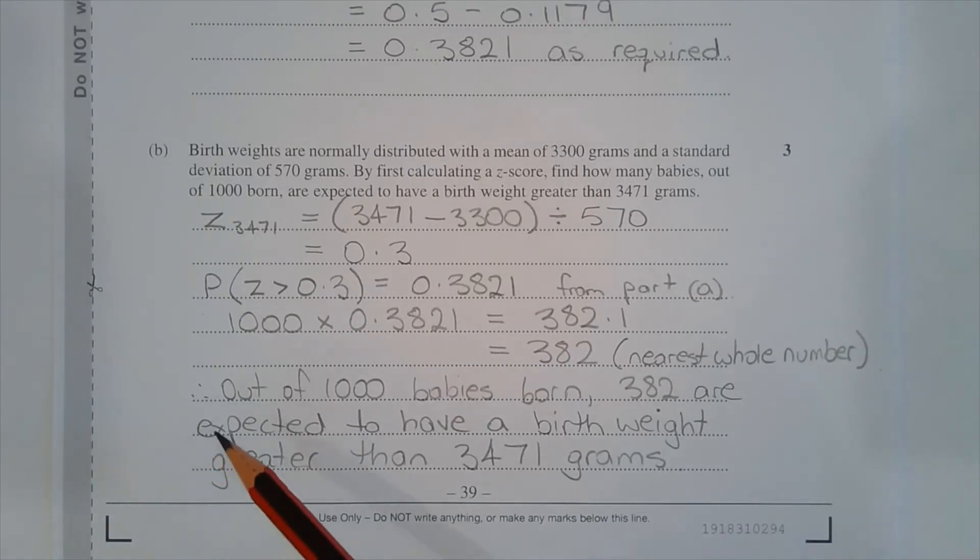Therefore, out of 1000 babies born, 382 are expected to have a birth weight greater than 3471 grams.